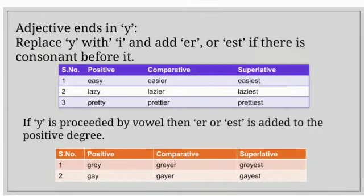Adjectives those end in Y. We replace Y with I and add ER or EST if there is consonant before it. Take care. If there is consonant before Y, we replace Y with I and add ER or EST to the positive degree. For example, easy.